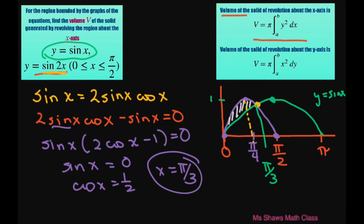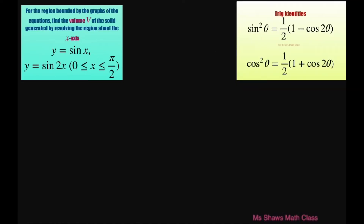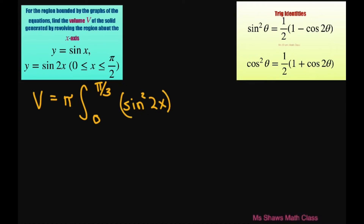We're going to have to subtract these two functions. Our upper bound for the shaded region is y equals sine of 2x, and the region bounded from the bottom is sine of x. So we're going to take sine of 2x subtract sine of x. So our volume equals pi times the integral from 0 to pi divided by 3 of sine squared of 2x minus sine squared of x, all dx.